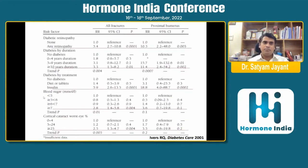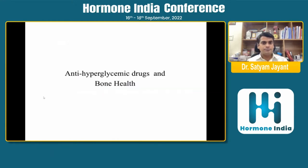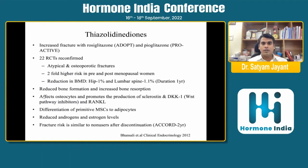Associated complications such as diabetic retinopathy, diabetes duration, insulin use, blood glucose levels, and presence of cataract are important comorbidities in type 2 diabetes that, when present, may further increase fracture risk. Now turning to drugs used in diabetes and how they affect bone health — starting with glitazones, which importantly increase fracture risk.